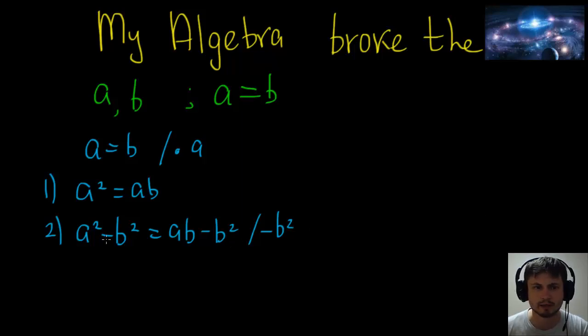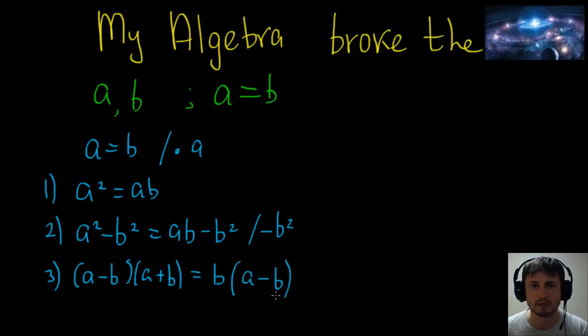All right, so let's look at step number three. We're actually going to try to factor this out. So if you remember, this is difference of squares, and this will give us a minus b times a plus b, right? And then this we can also factor out. We can actually take b outside and we'll get a minus b on the inside, right? So this is difference of squares and this is distributive property.